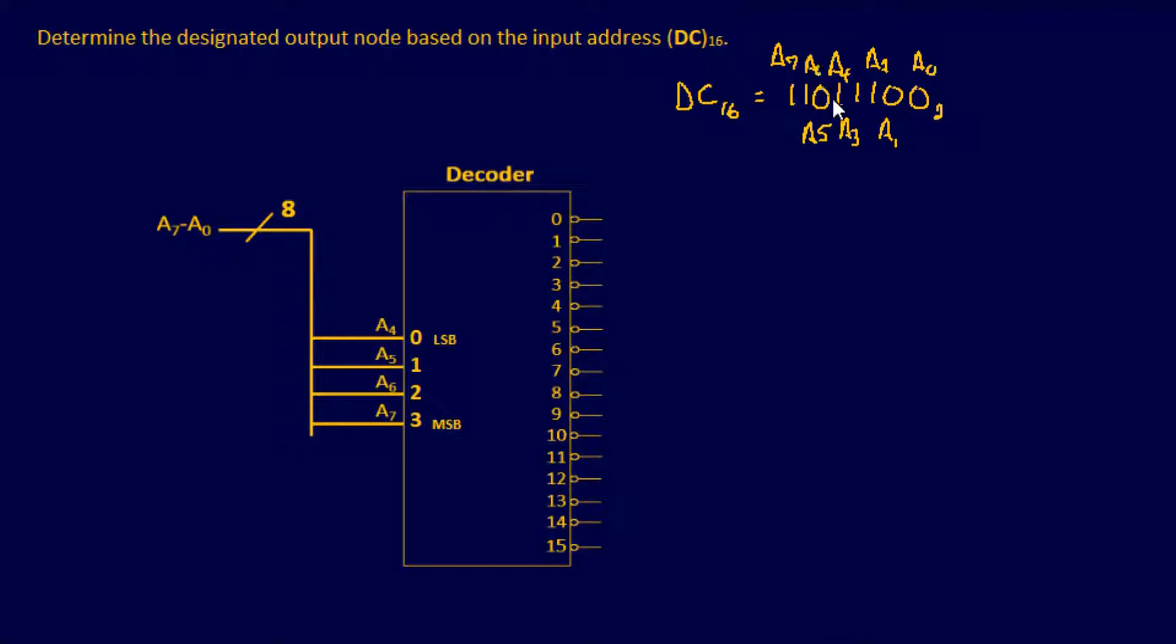So it looks like it's only using this last half right here for our address, which means it's going to be using 1, 1, 0, 1. And that's A7 through A4.